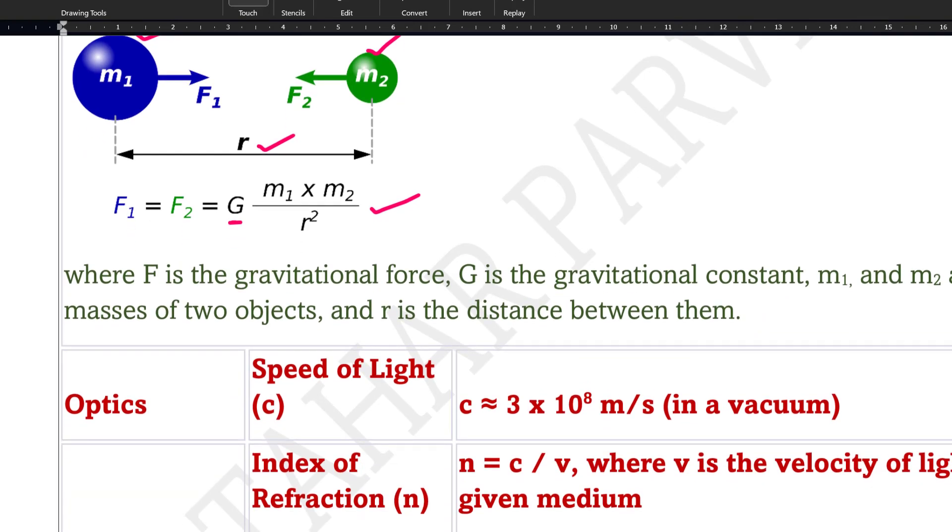Let's talk about optics. When we talk about optics, it is very important to understand that light has one speed: the value is 3×10⁸ meters per second. Another important formula is of refractive index, that is n = c/v, where c is the speed of light in vacuum and v is the velocity of light in a given medium.